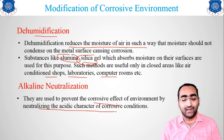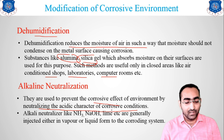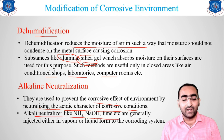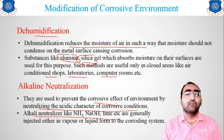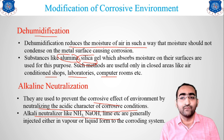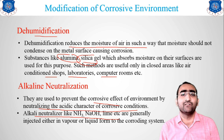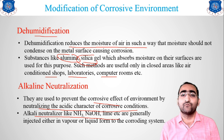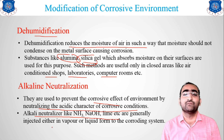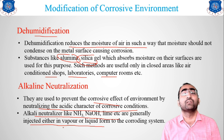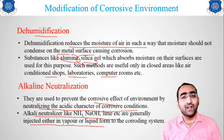The fourth sub-method is alkaline neutralization. Alkaline agents are used to prevent corrosion by neutralizing the acidic character of the corrosive environment. Alkaline materials such as NH3, NaOH, and lime — which are basic in nature — are introduced. In acidic environments like acid factories where corrosive gases are present, introducing a base neutralizes the acid, reducing or eliminating the corrosive effect. These alkaline agents are injected in either vapor or liquid form.